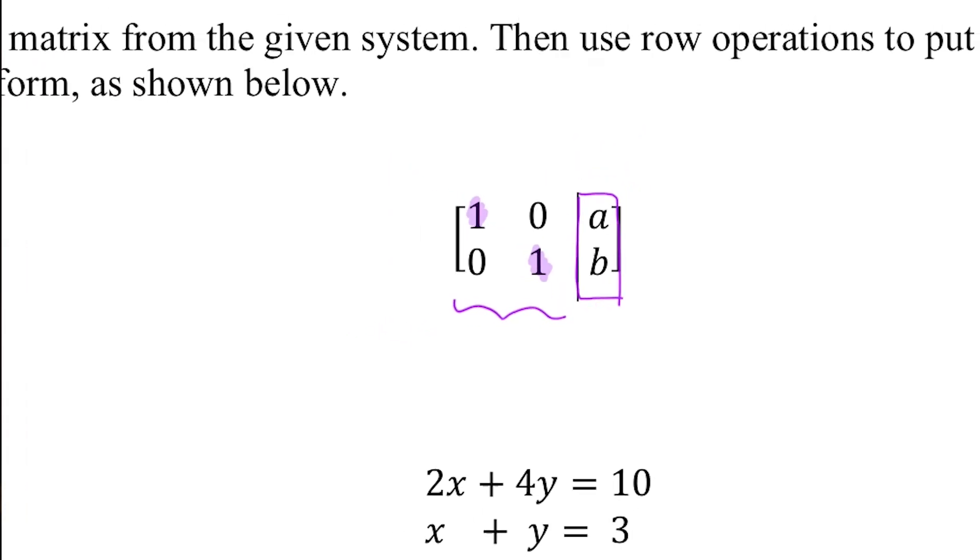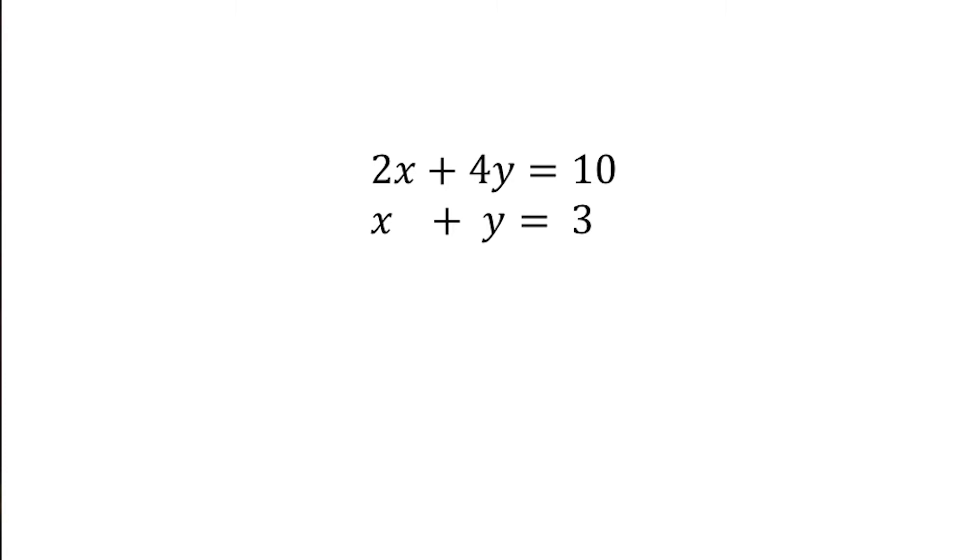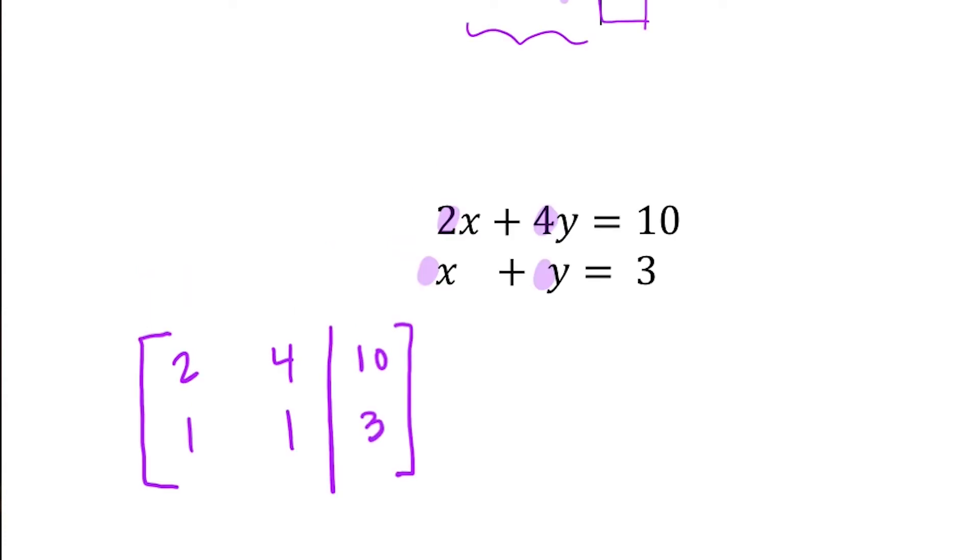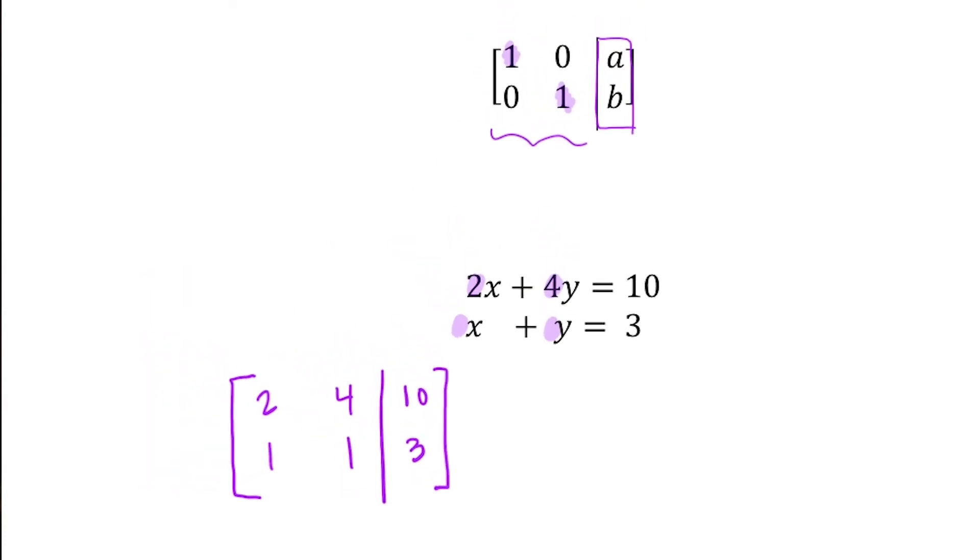So what we want to do is, if we're starting with these two equations, first just create our augmented matrix. So what we do is we stick our coefficients in the left-hand side: our coefficients are 2, 4, 1, 1. And then on this other side, we have the constants 10 and 3. You can either use a dashed or a solid line to separate those two. So if this is our augmented matrix, we want to turn it into this one right here, so we can get our solutions to show up on the right-hand side.